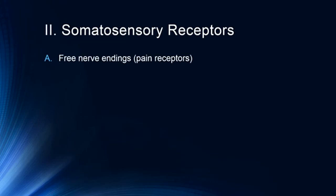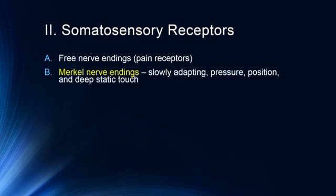There are different types of somatosensory receptors. Free nerve endings are pain receptors. Merkel nerve endings are slowly adapting types of receptors — they don't adapt very quickly, so you notice the presence of a stimulus for much longer. They respond to pressure, position, and deep static touch. So if you use a foam roller, you get that deep static touch into one part of your muscle, and you'll feel that in those Merkel nerve endings.